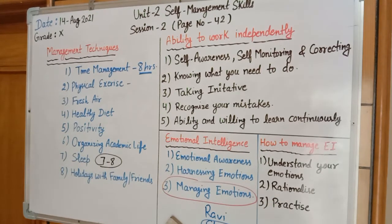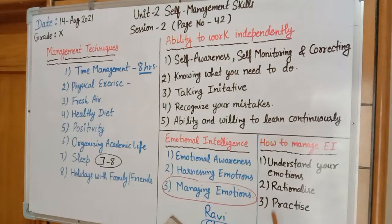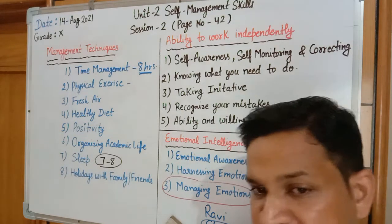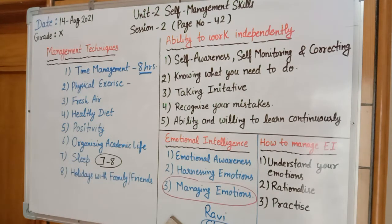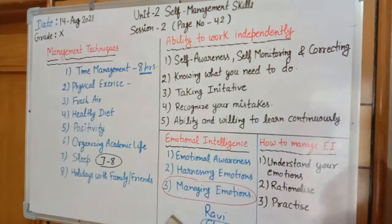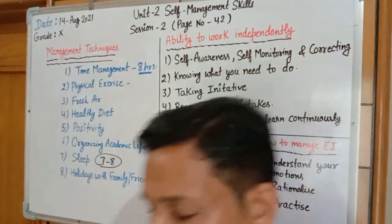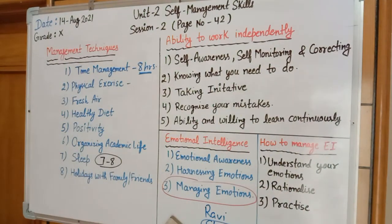Don't take decisions in a hurry, as it will spoil your life. The third point for managing emotional intelligence is practice. You must do continuous meditation and practice. This increases your working capability and reduces stress. Practice includes activities like yoga and meditation, which is a continuous process for your whole life. With this, Session 2 is complete.